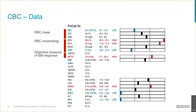Now we also have reticulocyte haemoglobin on the ProCyte or from the reference laboratory, giving us an indication of iron availability for erythropoiesis. Unlike serum iron, which doesn't help as much, and unlike looking for microcytosis and hypochromasia which takes time to develop, reticulocyte haemoglobin looks at cells produced in the last couple of days — giving a much more acute idea. Reasons it could be low: true iron deficiency, but more commonly reduced iron availability with inflammation, where hepcidin traps iron in storage cells. Also portosystemic shunts, some young animals, and naturally microcytic breeds like Japanese Akitas or Shiba Inus.